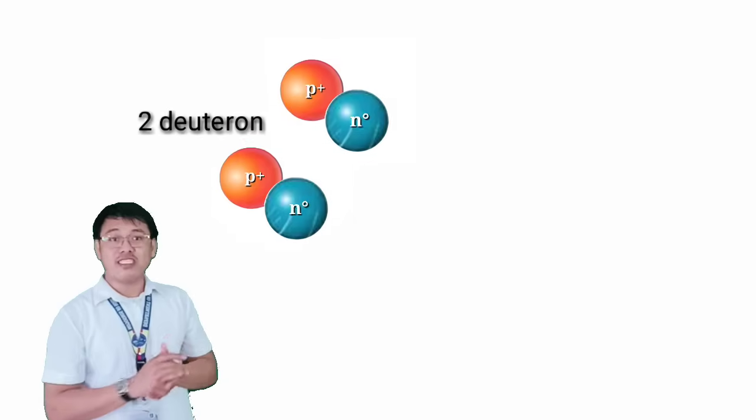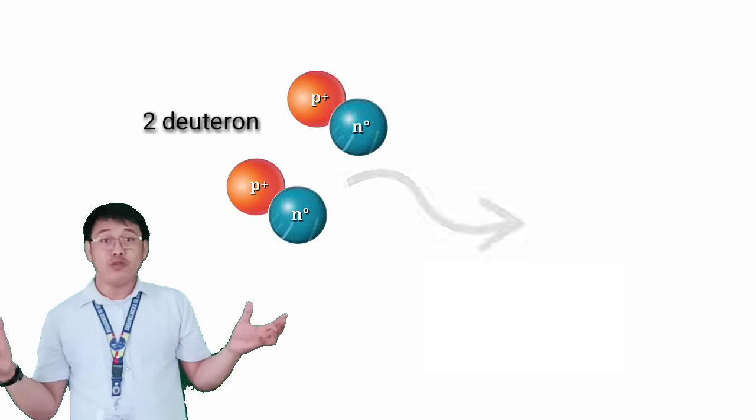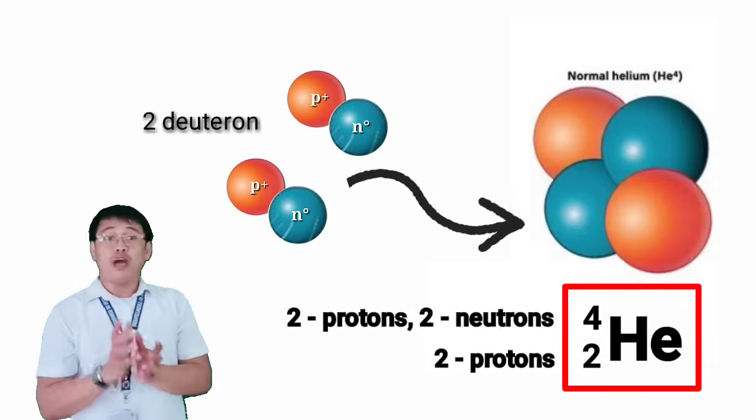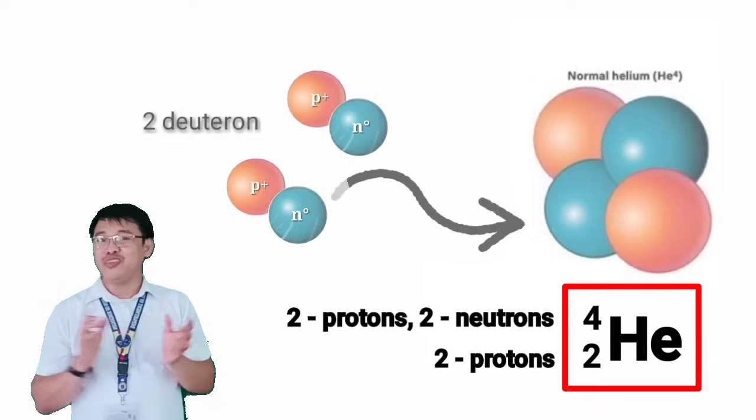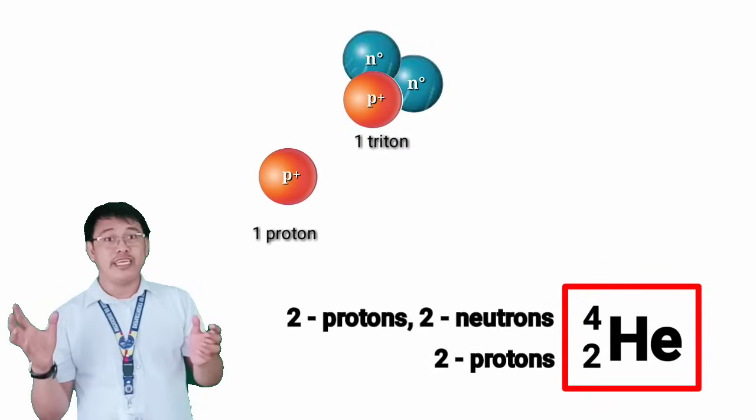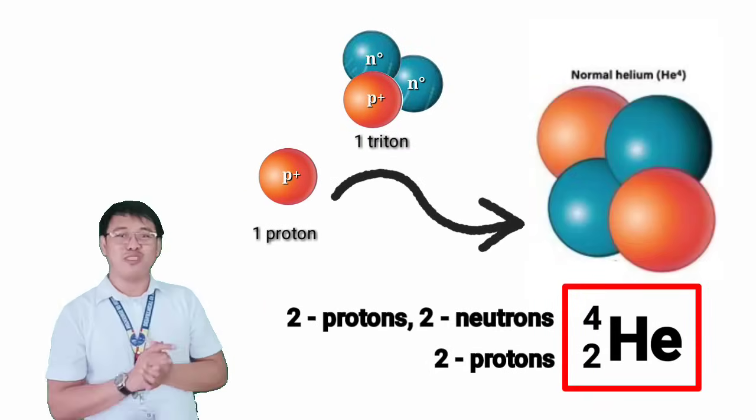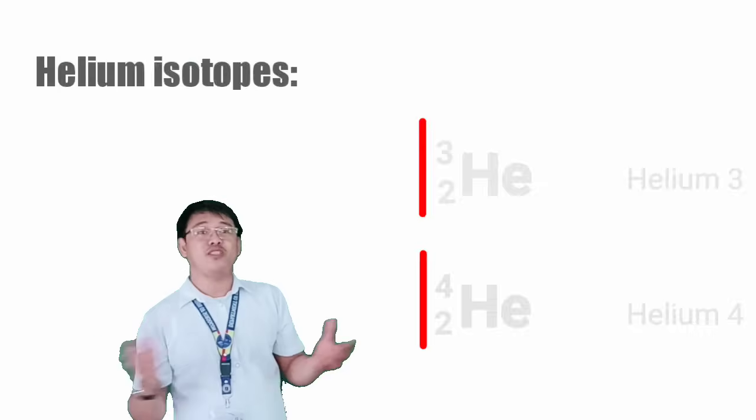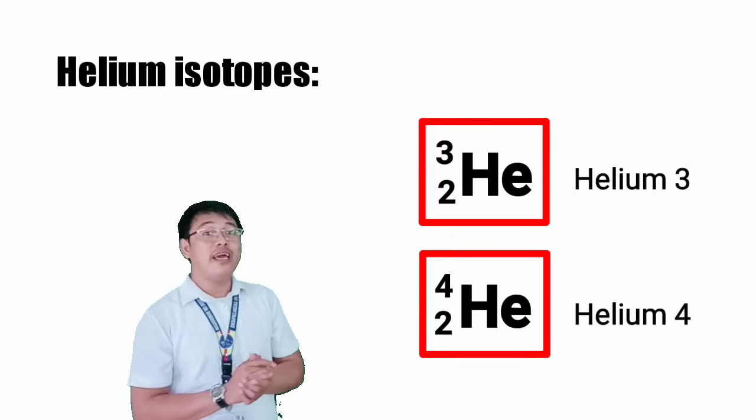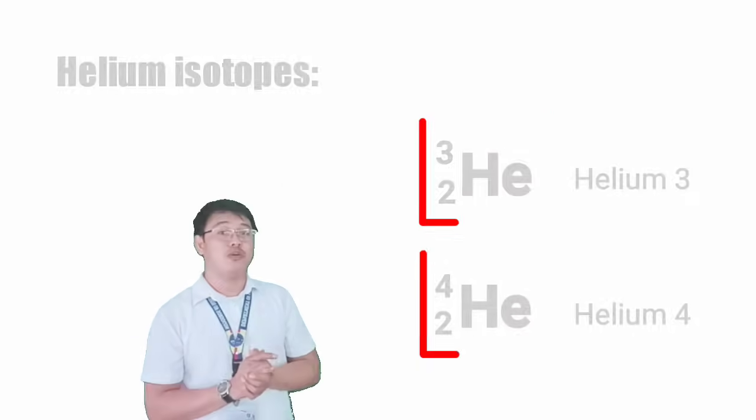Two particles of deuteron can combine to produce helium atom with two protons and two neutrons. Or when a triton is bombarded with a proton, helium is also formed. So there are many ways to form helium atom through the collision of hydrogen isotopes.